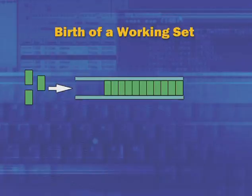The memory manager watches a process's memory activity and decides based on that activity whether it needs to grow or shrink relative to other processes. When a process is launched, it starts with an empty working set. As threads in that process begin touching virtual addresses, the working set begins to grow.